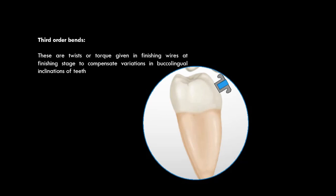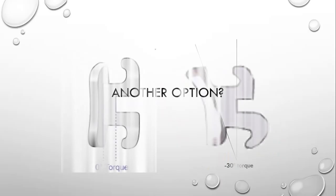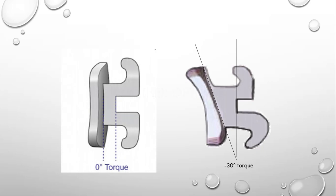So was there any other option? Yes. The other option is to use straight wire appliance or contemporary edgewise instead of the standard edgewise bracket. So it was the need of time to invent this kind of appliance. On my left hand side, it is standard edgewise bracket with zero degree torque.